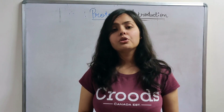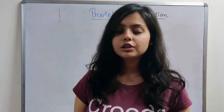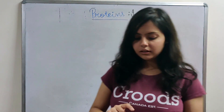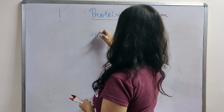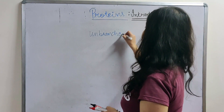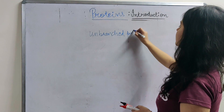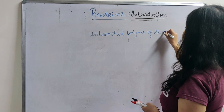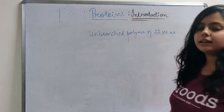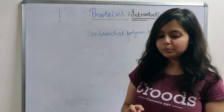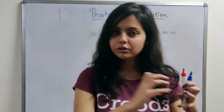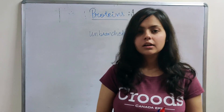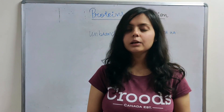What basically are proteins? Proteins are unbranched polymers of 22 standard amino acids. They are amino acids joined together via peptide bonds.